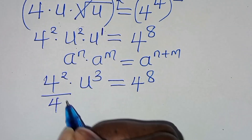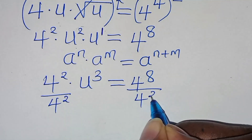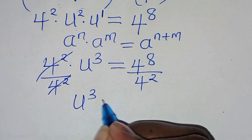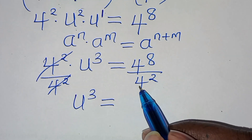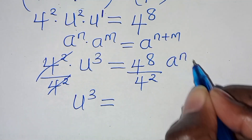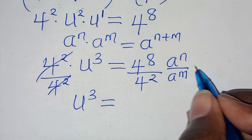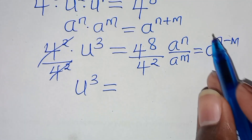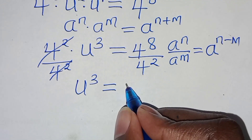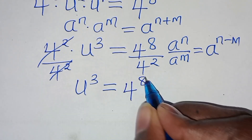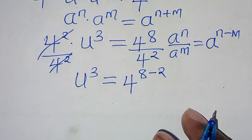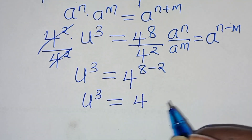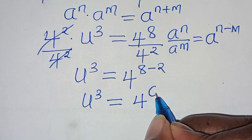So let's divide both sides by 4 to the power of 2. Let's simplify: we have u to the power of 3 equal to 4 to the power of 8 divided by 4 to the power of 2. This is in the form of a to the power of n over a to the power of m, which we can express as a raised to the power of n minus m. Applying this exponent property, we have u to the power of 3 equal to 4 raised to the power of 8 minus 2, which equals 6. So u to the power of 3 equals 4 to the power of 6.